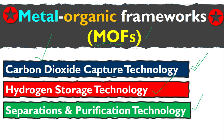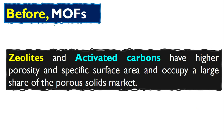Let me show you the literature. But before that — MOF is the most porous solid material. Before MOF, there were two dominant materials: zeolites and activated carbons. These two materials were the most porous materials available, and they basically dominated the industry for porous solid markets.